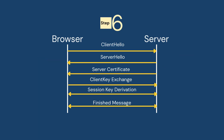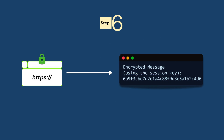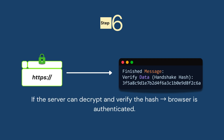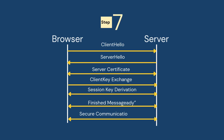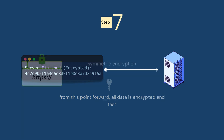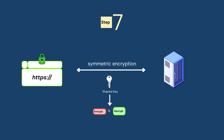Step number six: the browser says 'I am ready.' It sends a message encrypted using the session key to prove it works. It includes a hash of all the handshake messages to prevent tampering. If the server can decrypt and verify the hash, the browser is authorized. Step number seven: the server replies the same way — it sends back an encrypted confirmation, and that's it. From this point forward, all data is encrypted and fast. They now talk using symmetric encryption, which is much quicker and still very secure.